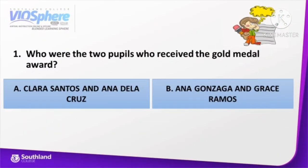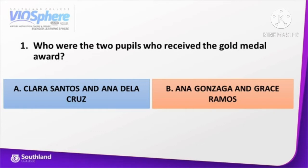Sample question from the given paragraph: Who were the two pupils who received the Gold Medal Award? A. Clara Santos and Ana de la Cruz, or B. Ana Gonzaga and Grace Ramos. Very good! The correct answer is B. Ana Gonzaga and Grace Ramos.